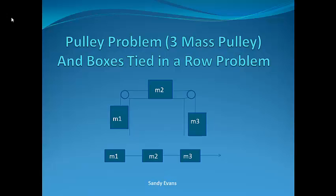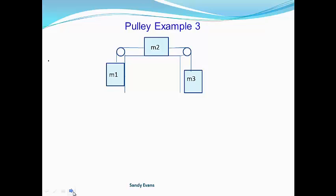Now we're going to look at some more problems. We're going to look at two: one will be a three-mass pulley system, and the other one's going to be three masses tied in a row. So our first one is a pulley system with three masses on it.